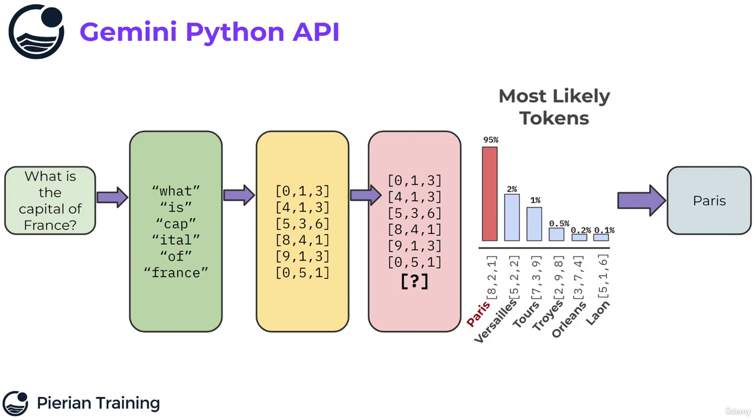But if you're doing something more creative, like asking for a poem, then there's going to be a kind of flatter distribution and you're going to get more creative outputs. Because remember, you're not necessarily choosing the most likely token. You are sampling from this distribution. So in this kind of made up case, you could have had a 2% chance of picking Versailles. Maybe that's because Versailles was a historical capital of France. So it's not necessarily guaranteed that you're always going to get the next most likely token.